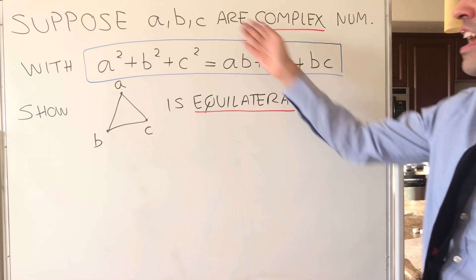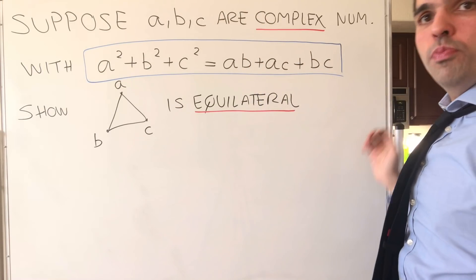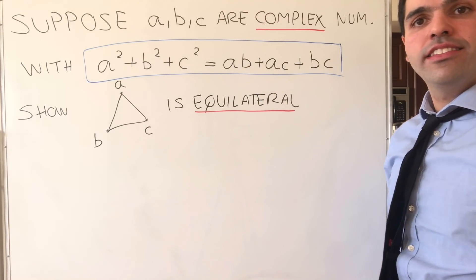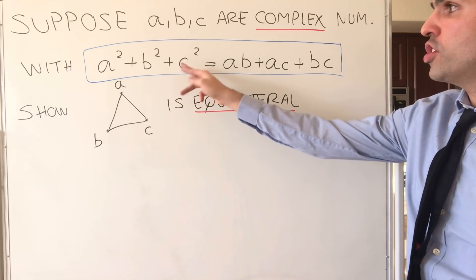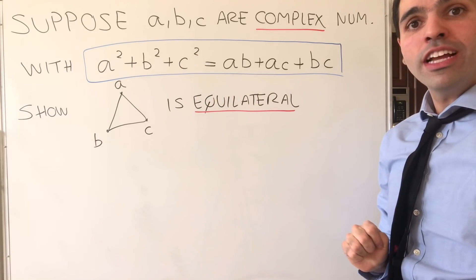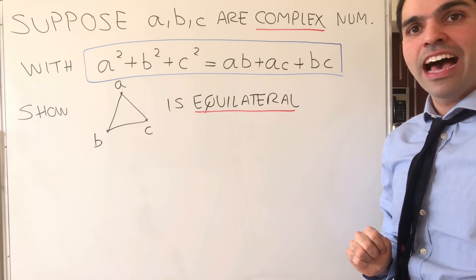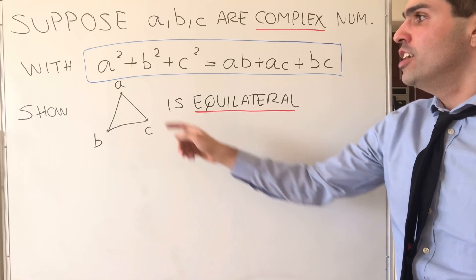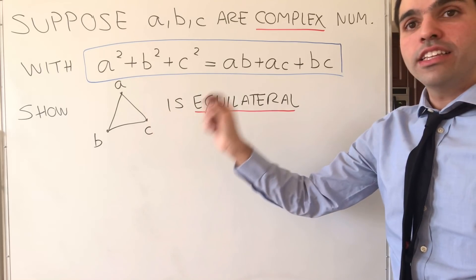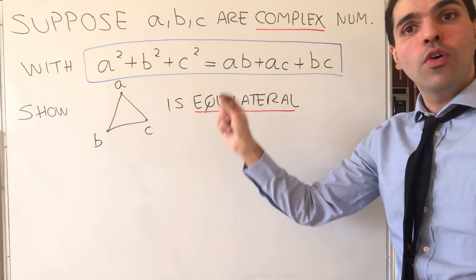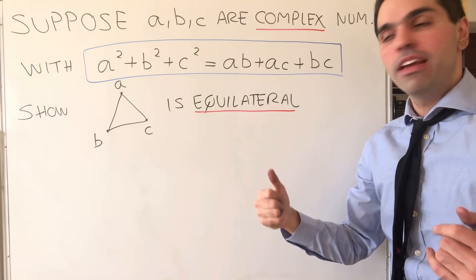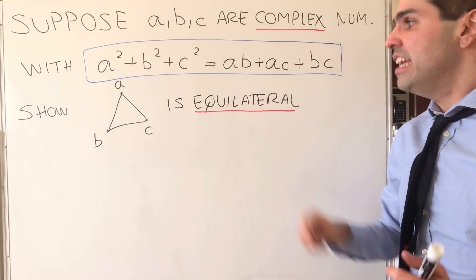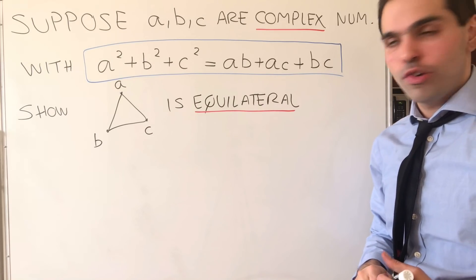So what does it say? It says: suppose A, B, and C are complex numbers such that the following identity is satisfied — show that the triangle ABC in the complex plane is equilateral.